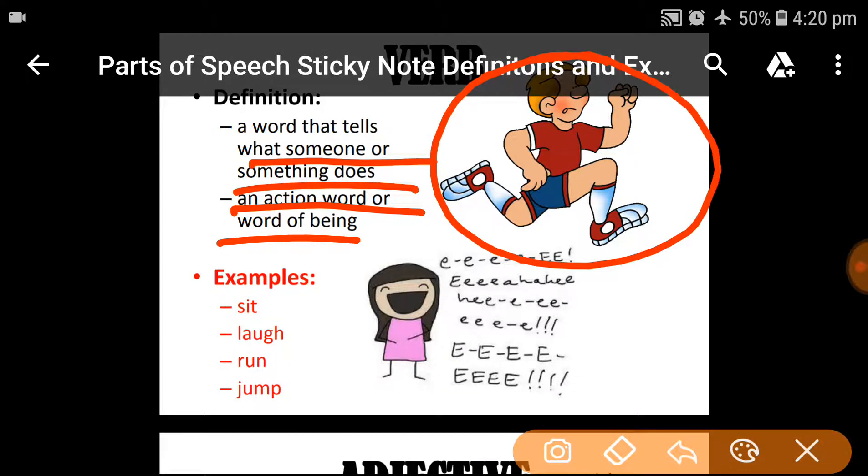Action words are also called the verbs. For example, you can see, this person is running. Run is also action. Sit. Another action examples are sit, laugh, run, jump.